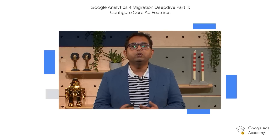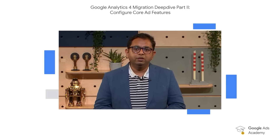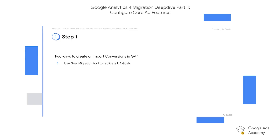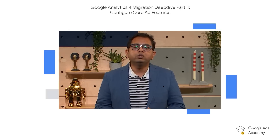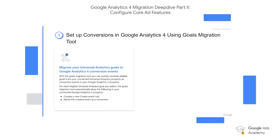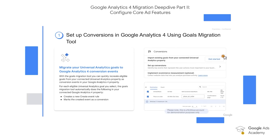The first step is to create conversions in GA4 and there are two ways to do it. One way is to use the goal migration tool to replicate UA goals as conversions in GA4. The other way is to create conversions manually. If you currently use UA goals, the goal migration tool can help you replicate UA conversion goals as events in GA4 property — it automatically creates a new event rule and marks the created event as a conversion.